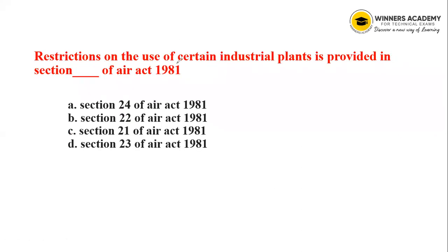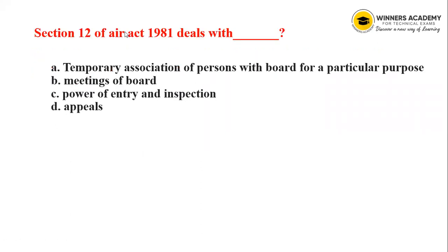Next question: Restrictions on the use of certain industrial plants is provided in which section of the Air Act? Options are Section 24, 22, and 21. The answer is Section 21.